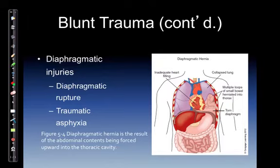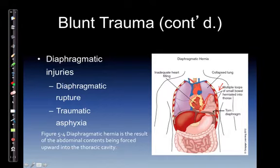Diaphragmatic ruptures can be difficult to diagnose in the field. They result from abnormal abdominal contents being forced upward into the thoracic cavity — for example, intestine coming through a torn section of the diaphragm. If you're listening to lung sounds and hear bowel sounds where lung tissue should be, this is a clinical indication that you may have a diaphragmatic rupture.